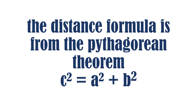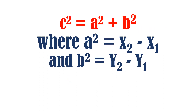The distance formula comes from the Pythagorean theorem, where c squared is equal to a squared plus b squared. In the Pythagorean theorem, a squared is also equal to (x sub 2 minus x sub 1) squared, and b squared is also equal to (y sub 2 minus y sub 1) squared.